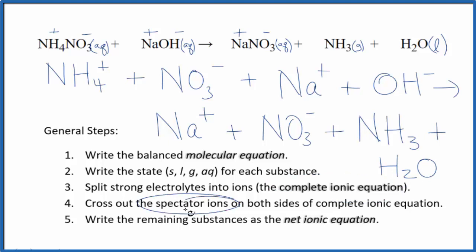Now we can cross out spectator ions. They're on both sides of the complete ionic equation. They haven't changed, and we're not interested in them. We have the ammonium ion here and ammonia over here in the products. They're different. We can't cross those out.